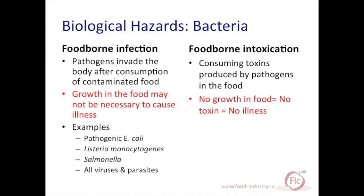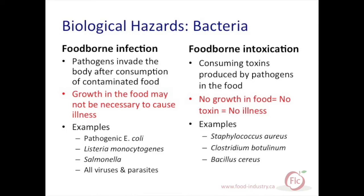A few examples of bacterial pathogens that grow and infect humans are pathogenic E. coli, Listeria monocytogenes, and Salmonella. Examples of bacteria that infect with their toxins include Staphylococcus aureus, Clostridium botulinum, and Bacillus cereus.